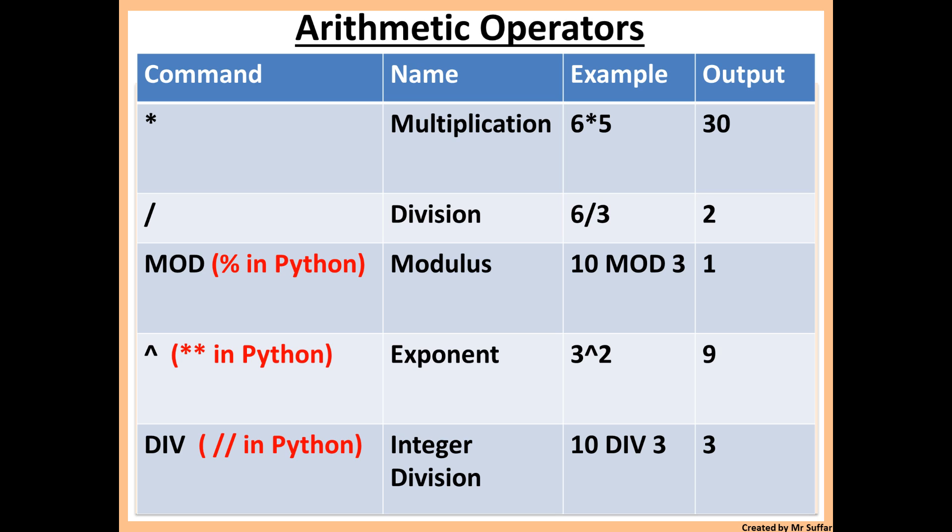Another example: 5 mod 2. If you divide 5 into 2, it does not give you a whole number, so you go down to 4. 4 divided by 2 will give you a whole number, so the difference between 5 and 4 is 1. If you do 10 mod 2, that has no remainder, so the answer would be 0.